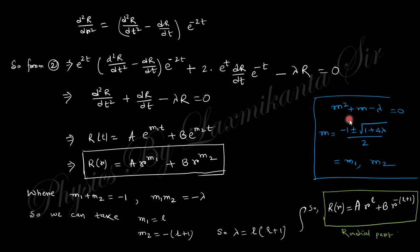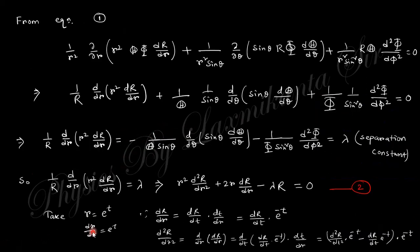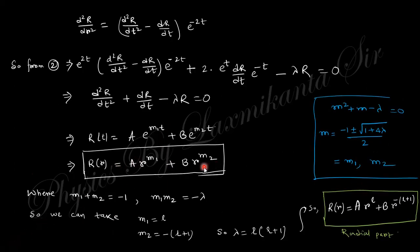We already discussed the solution of this second-order differential equation in the previous lecture. The characteristic equation gives two real and unequal roots, so the solution takes the corresponding form. Replacing e to the power t with R, we easily obtain the radial part of the solution.